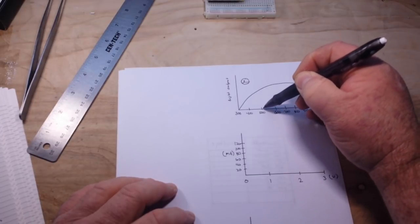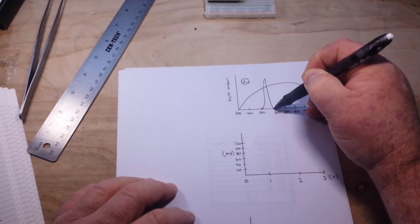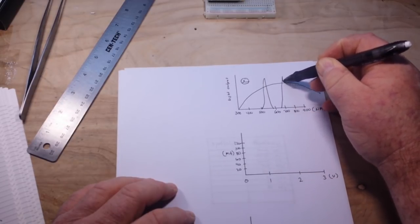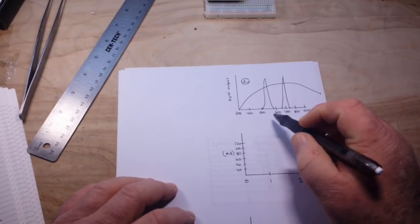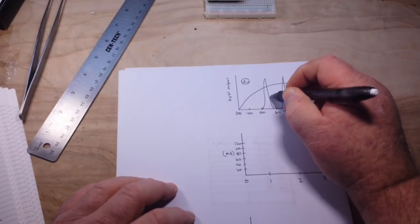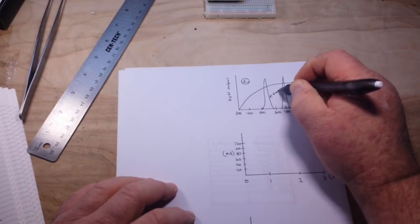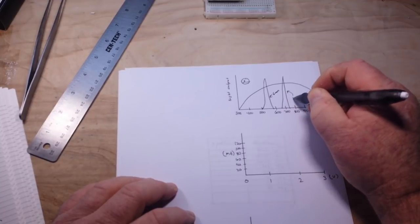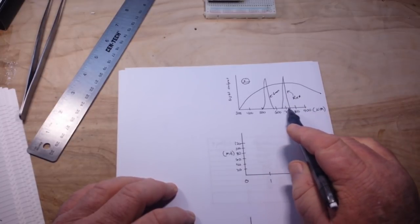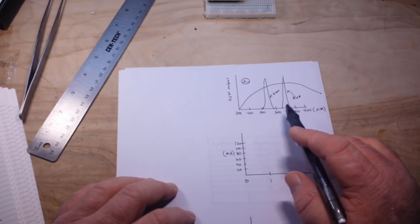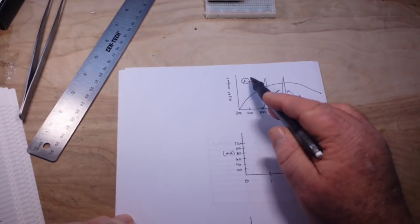But if we talk about some LEDs, then we're going to see curves like this. Like, for instance, this would be a green LED, and this one might be a red LED.